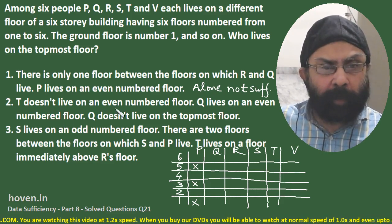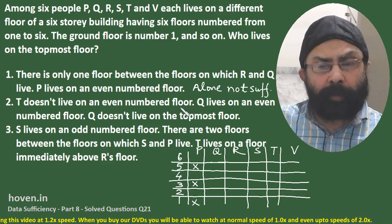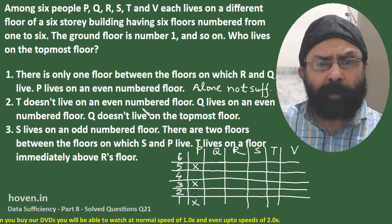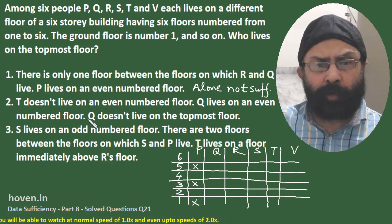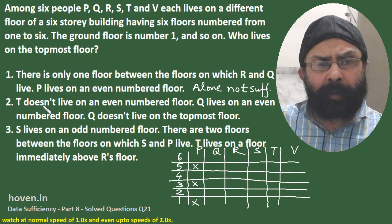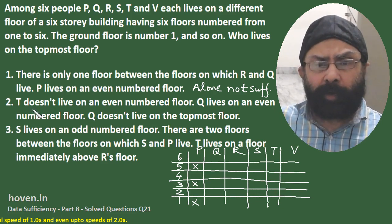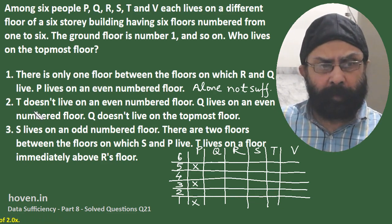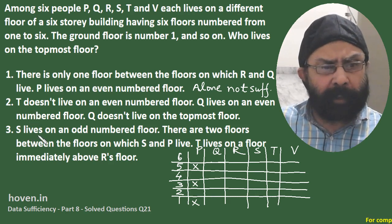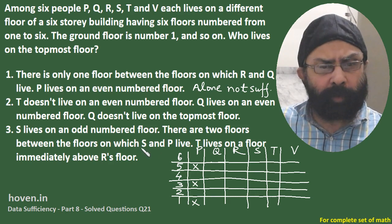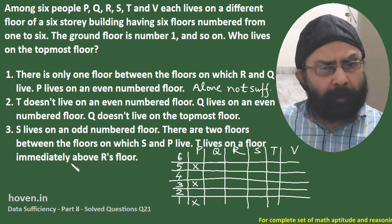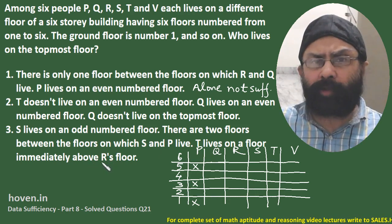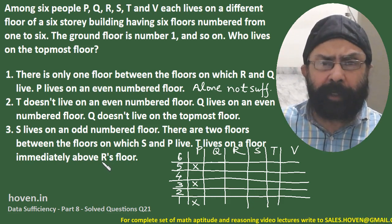The second statement says: T doesn't live on an even numbered floor; Q lives on an even numbered floor; and Q doesn't live on the topmost floor. This second statement alone talks only about T and Q, so it is also not going to help us alone. Looking at the third statement: S lives on an odd numbered floor; there are two floors between S and P; and T lives on a floor immediately above R's floor. We can see that the third statement alone will also not help us — at least intuitively we can see that.